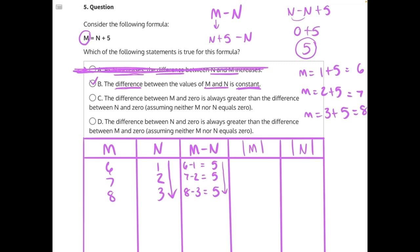C says the difference between M and 0, this is just a lot of words to say the absolute value of M, is always greater than the difference between N and 0, or the absolute value of N. So M's absolute value is always greater than N's absolute value. Well, let's try some numbers for that as well.